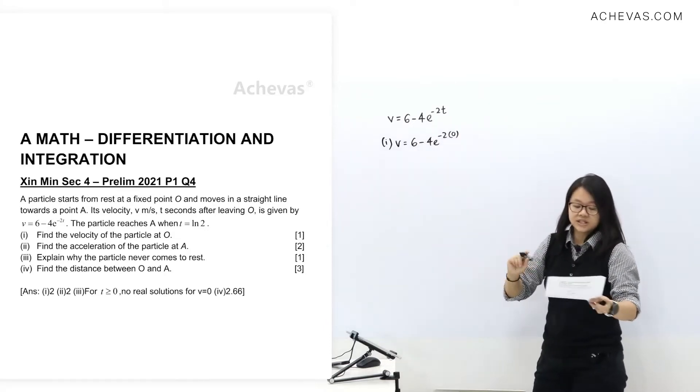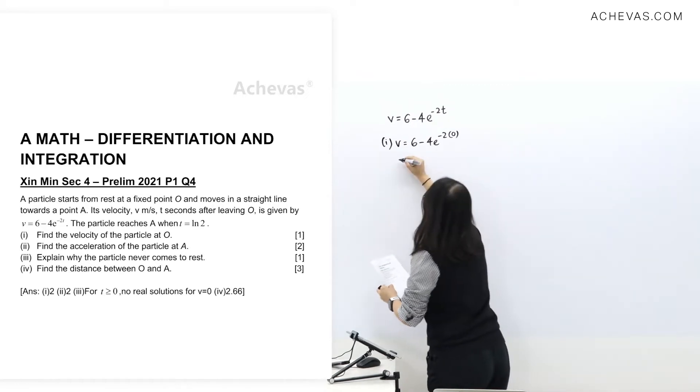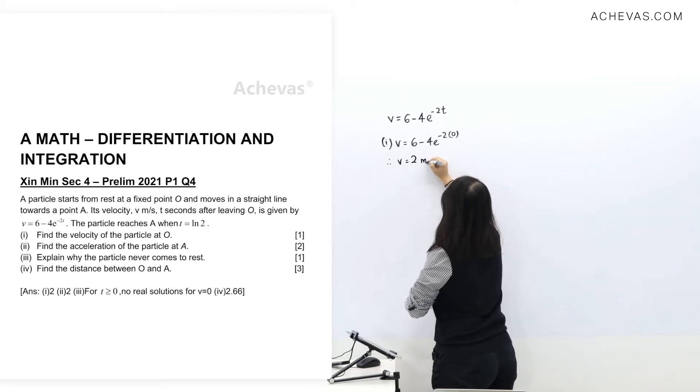So easy. You will get V equals 2, meter per second.